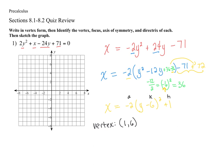So I found my vertex and I'm going to graph it at (1, 6). Which way is this going to open — left or right? It's going to open left, because a is negative, and negative is the direction that goes left on a number line. If you wanted to sketch it, you could sketch it.